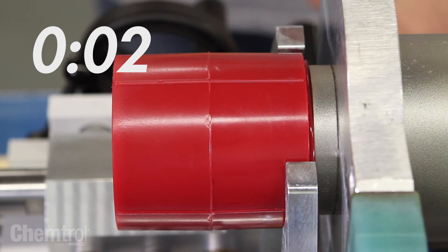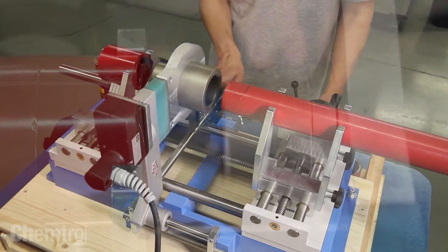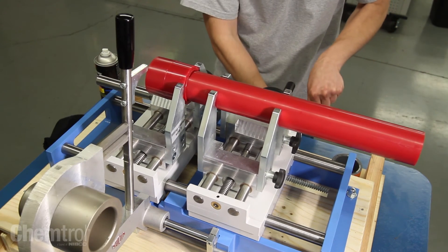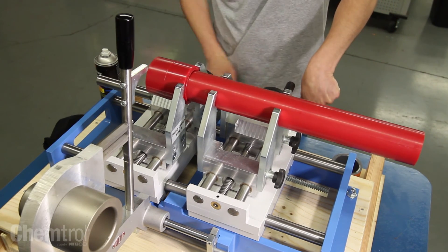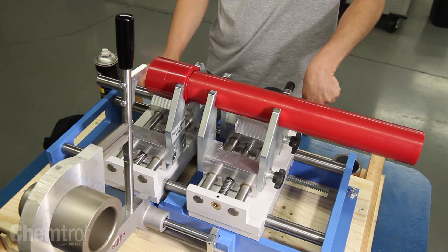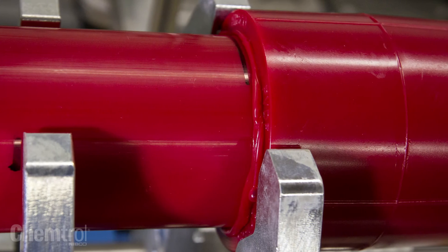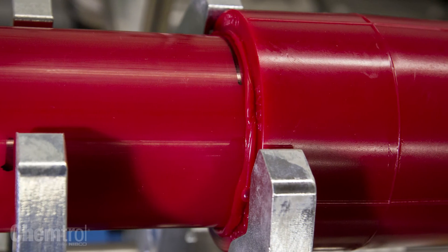When the timer beeps, turn the hand wheel counter clockwise until the sleds are fully open and push back the heating element. Turn the hand wheel clockwise until the pipe is fully inserted in the fitting socket. Lock the set screw and wait 30 seconds for the fusion joint to cool before releasing the set screw.